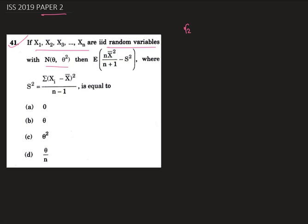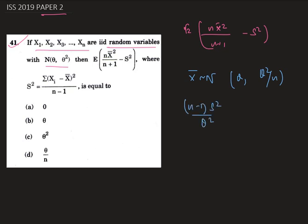Let's find the expected value of n*x̄² divided by (n+1) minus s². We already know that x̄ follows normal(θ, θ²/n), and (n-1)*s² divided by θ² follows a chi-square distribution with (n-1) degrees of freedom. They are also independent.